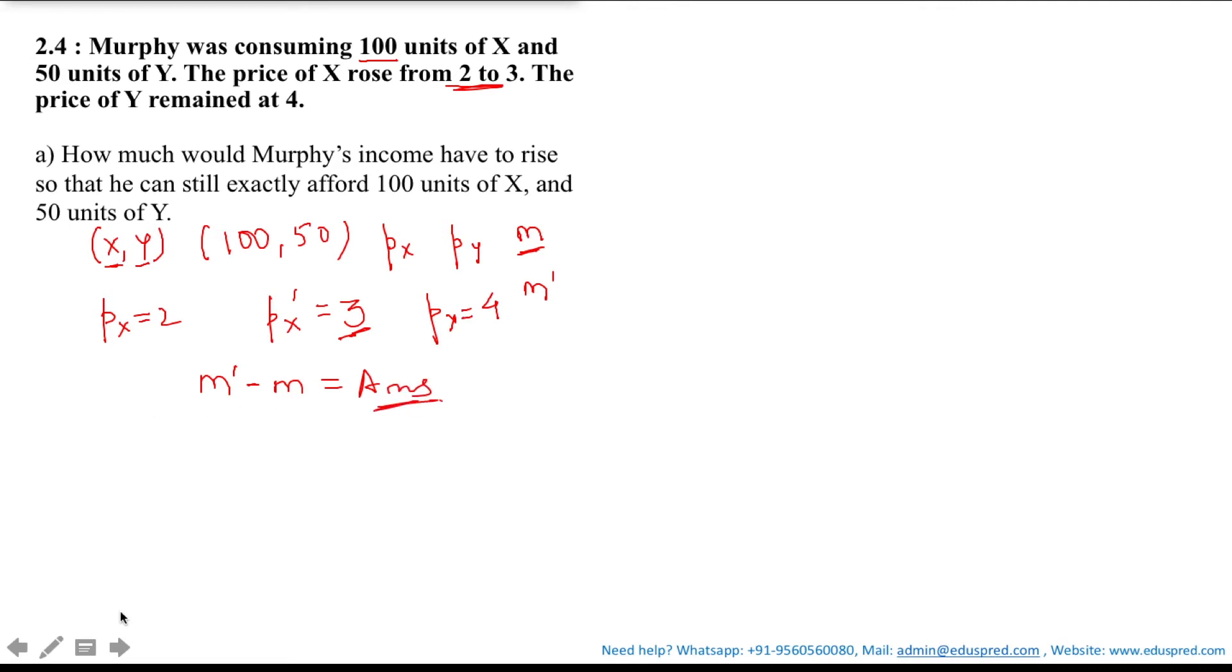So let's begin. We know that the general equation of the budget line is PX times X plus PY times Y is equal to M. We know that PX is 2 and the consumer is consuming 100 units of X so that would be 100.